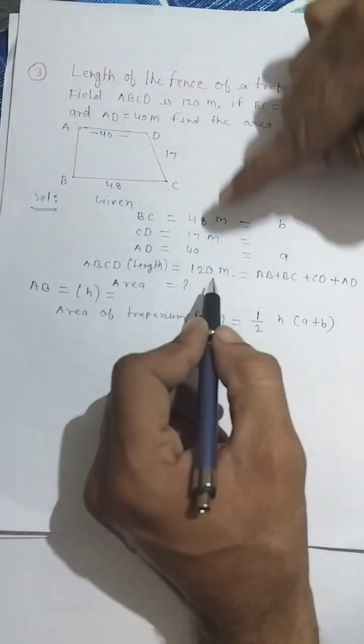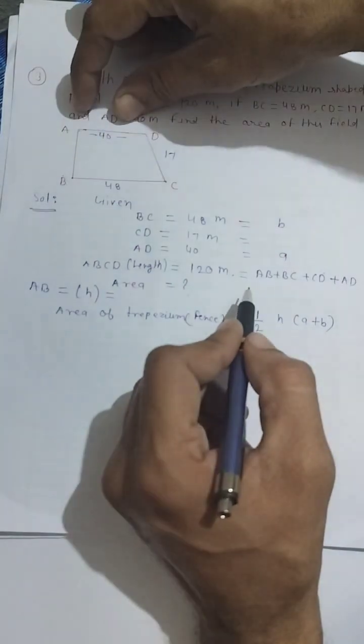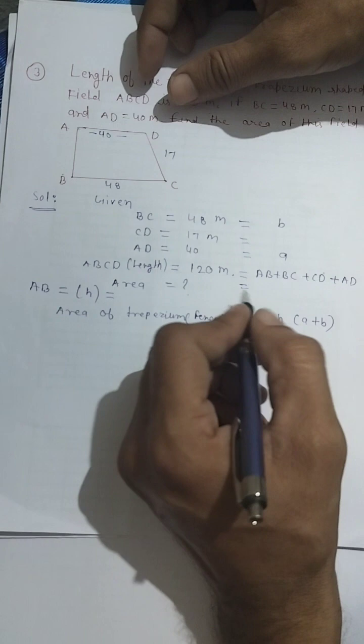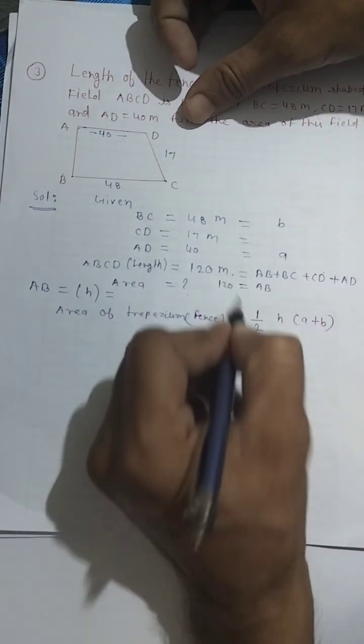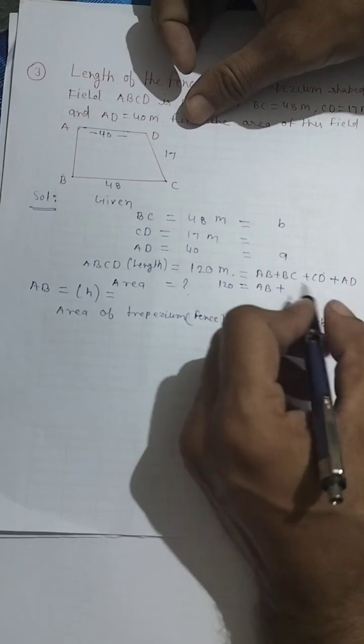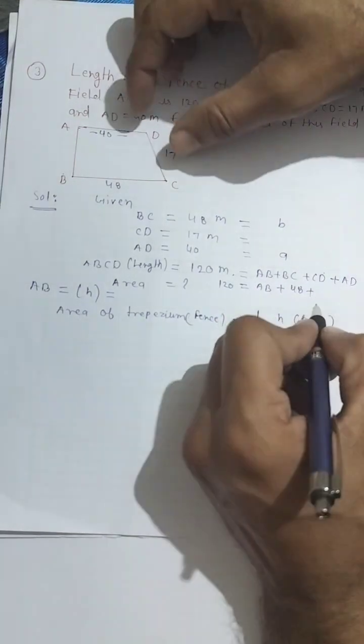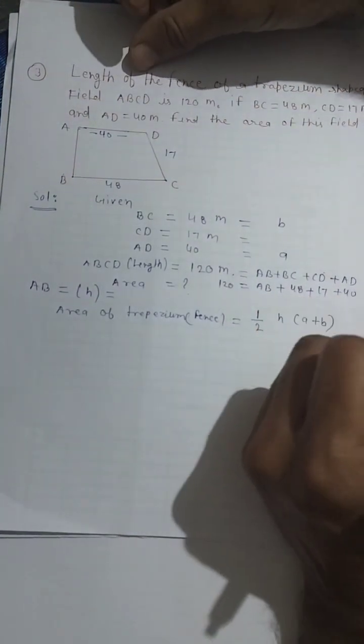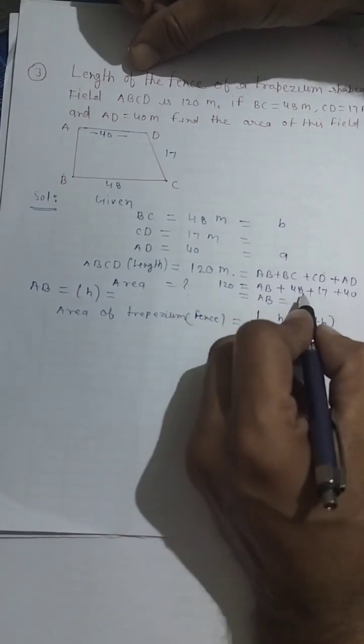To find AB, we know that AB plus BC plus CD plus AD equals 120. So AB equals 120 minus the other sides. BC is 48, CD is 17, AD is 40. Let's add these.